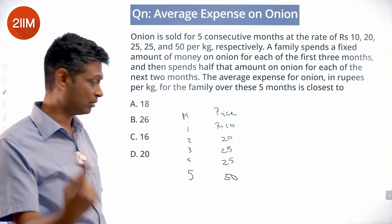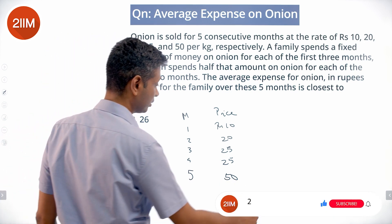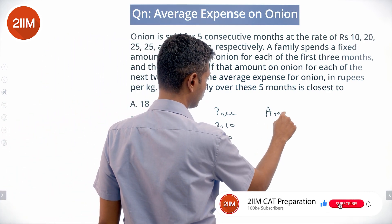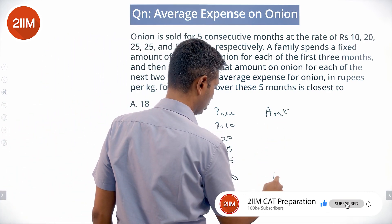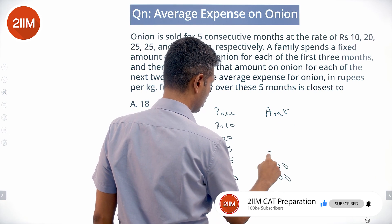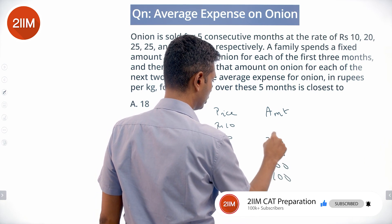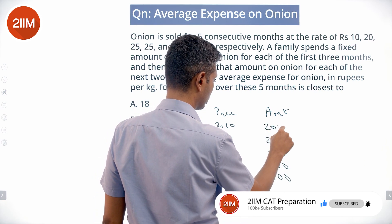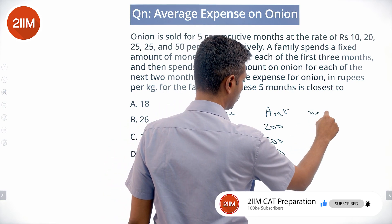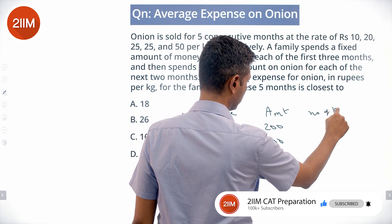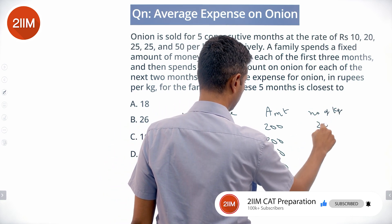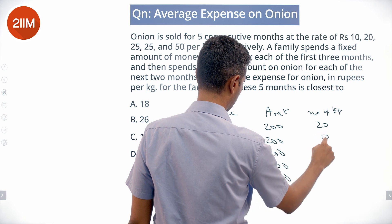I'm going to take the amount as 200, so spending is 200, 200, 200, 100, 100. Then number of kilograms purchased each month is 20, 10...